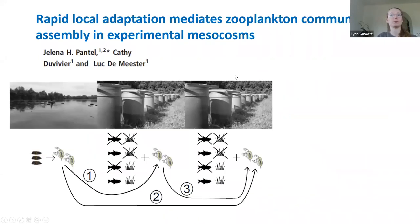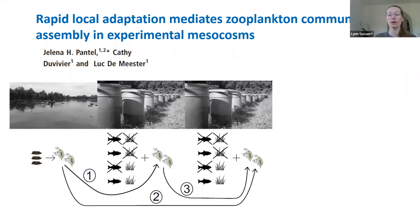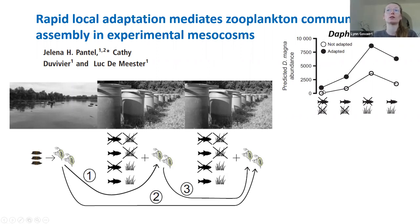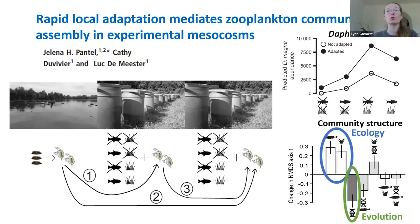As a second example, Pantel and colleagues used a natural Daphnia population placed into four ecological environments — presence or absence of fish and macrophytes. After a selection experiment, they collected adapted and non-adapted Daphnias and placed both in the four ecological conditions. They found that non-adapted Daphnias showed a reduction in density, and that the ecological effects of fish predation and macrophytes had an equal magnitude but opposite sign effect on community structure as adaptation.